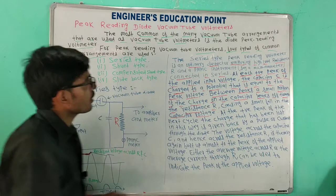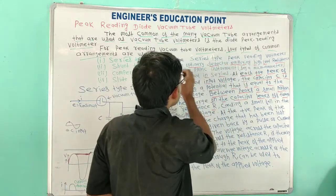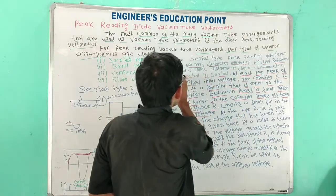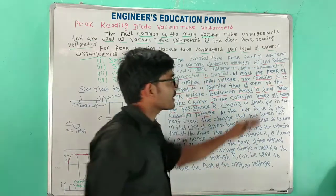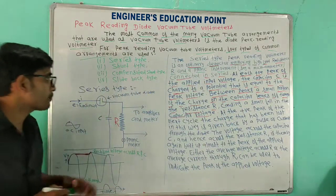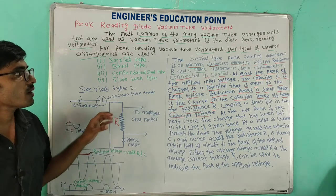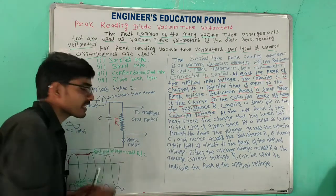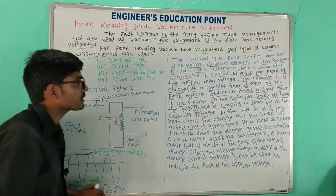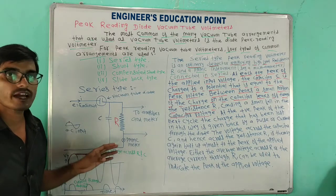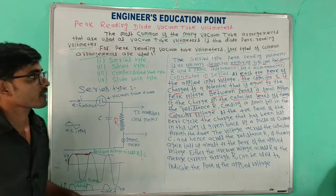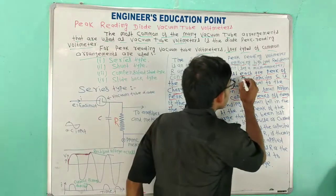The series type peak reading voltmeter is an ordinary detector employing a high load resistance R and a PMMC instrument, such as a microammeter, connected in series. In this series type reading vacuum tube voltmeter, a high load resistance and a microammeter are connected in series.